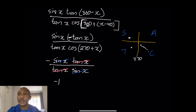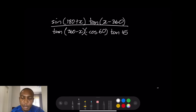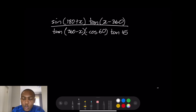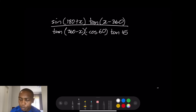Let's take another one very quickly — going into our second example. We've got sin(180 + x) times tan(x - 360), divided by tan(360 - x) and minus cos(60) times tan(45). I just wanted to include some special angles. I'll cover those in time — I just wanted to show you how to go about this one, taken from a past exam question as well. So now what we're going to do is again go to our CAST principle, our CAST diagram.